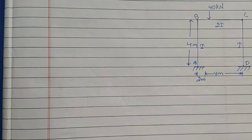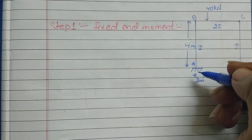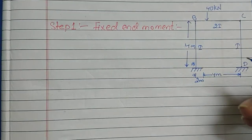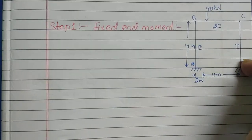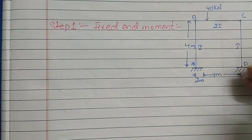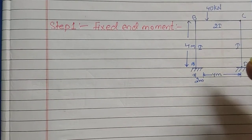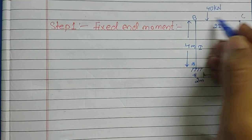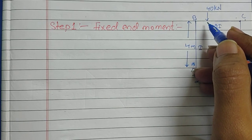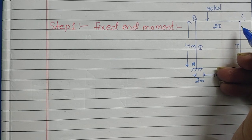For finding the fixed end moment, remember that there must be some load on the span. There is load on span AB but span CD has no load, so the fixed end moments at A and B for span AB are zero, and at D and C for span CD are also zero. We calculate the fixed end moment on span BC using the formula: moment at B equals minus w·a·b² / L², and moment at C equals plus w·a²·b / L².